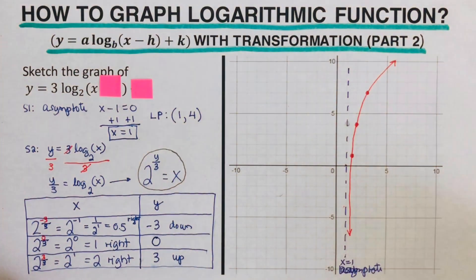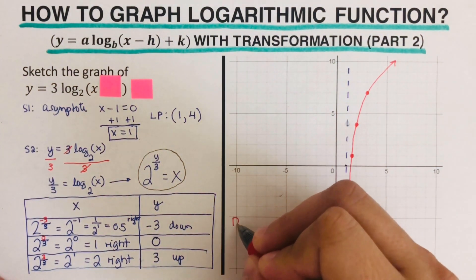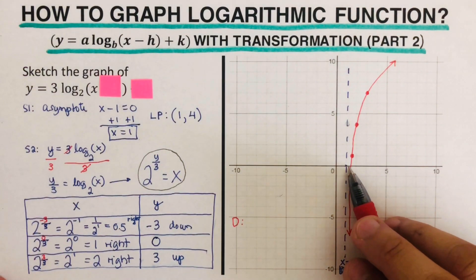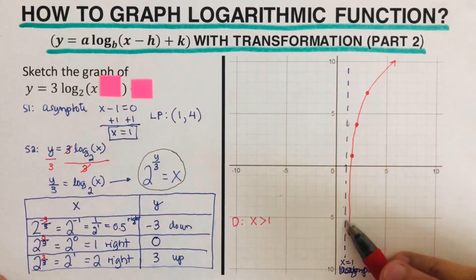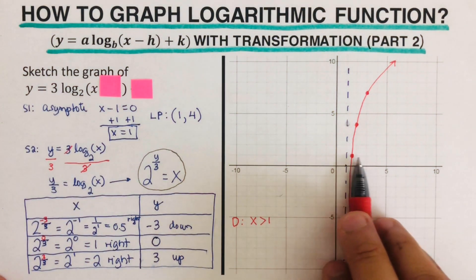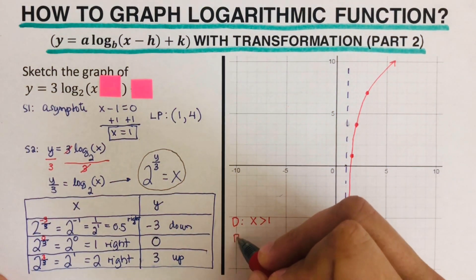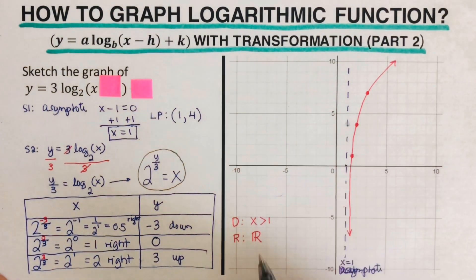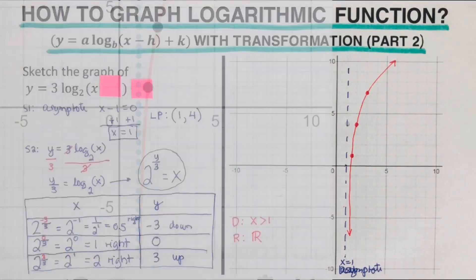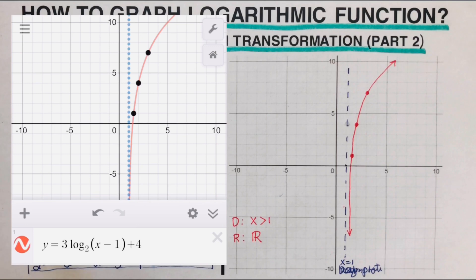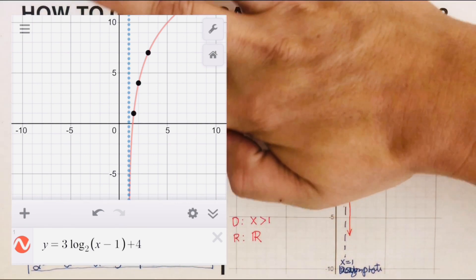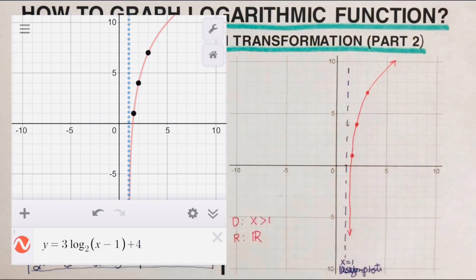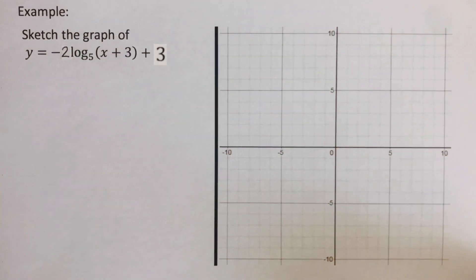We can now determine the domain and range. The domain is all x greater than 1, because the graph can never touch the asymptote at x equals 1 — everything to the right of it. The range is all real numbers. On the side you can see the Desmos version of this graph — the paper version and the Desmos version match. I encourage you to pause the video and try the next problem on your own, then check your answer.